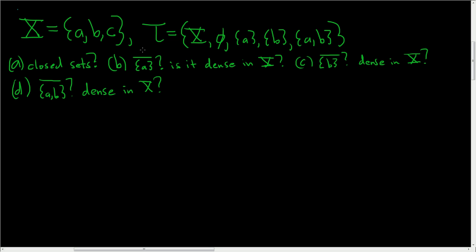We have a set X containing the points A, B, and C. We have tau, a topology on capital X. We have to answer a few questions: find the closed sets, find the closure of the singleton set A, and determine whether it is dense in X, along with similar questions for C and D. Let's go ahead and work through it carefully.